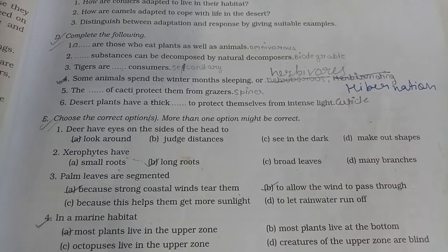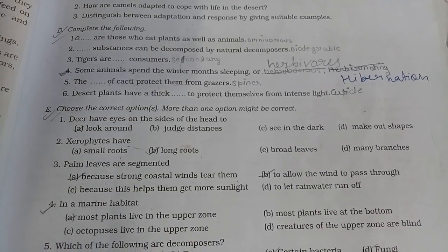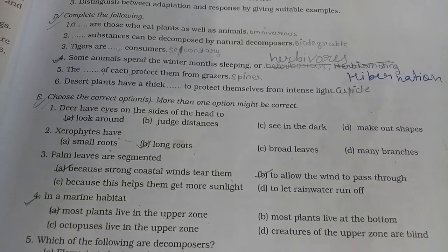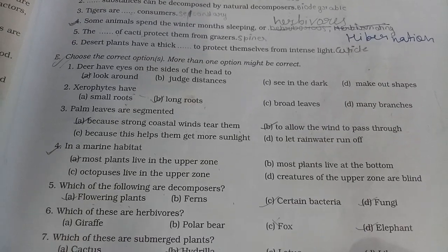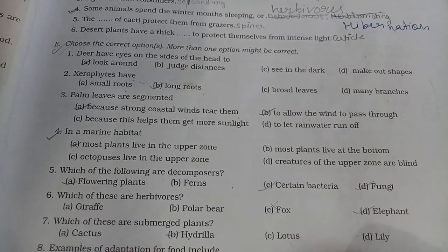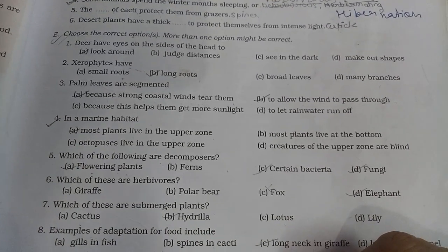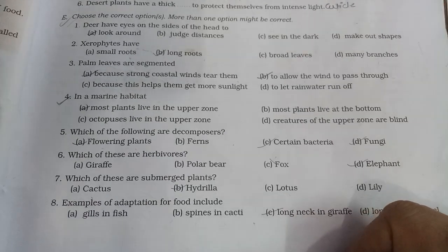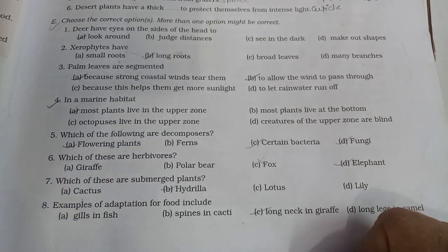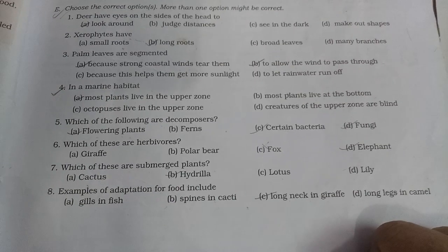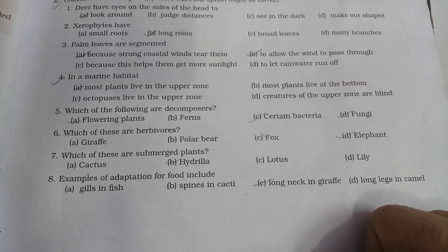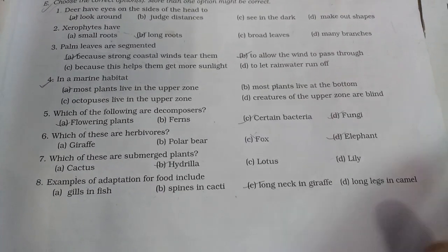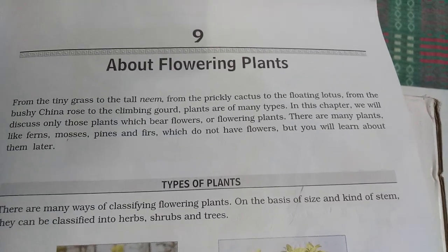Xerophytes have long roots. Palms have fan-shaped leaves to allow strong coastal winds to pass through. Most plants live in the upper zone of the aquatic habitat. Decomposers include certain bacteria and fungi. Herbivores include elephants. A submerged plant example is Hydrilla. A flower-feeding animal with a long neck is a giraffe.